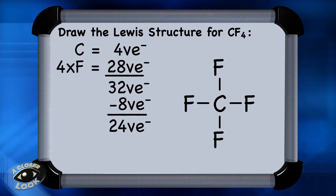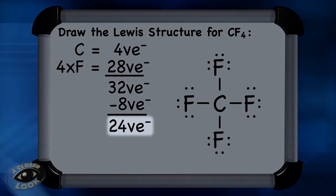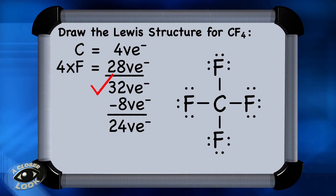There are 24 more that still need to be placed, so start placing lone pairs of electrons, shown as dots. Counting through: 2, 4, 6, 8, 10, 12, 14, 16, 18, 20, 22, 24. Those 24 electrons added to the 8 from the single bonds equals 32, the same number as the original tally of valence electrons, so all 32 electrons have been placed.